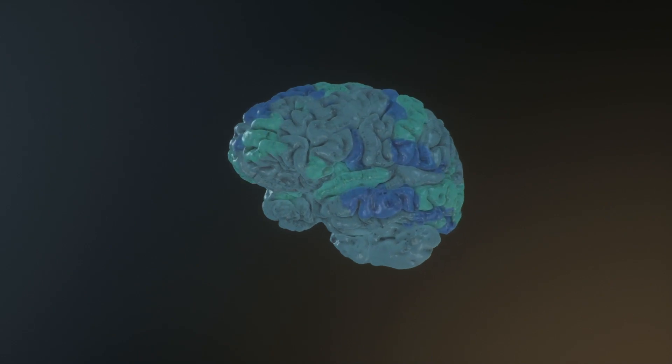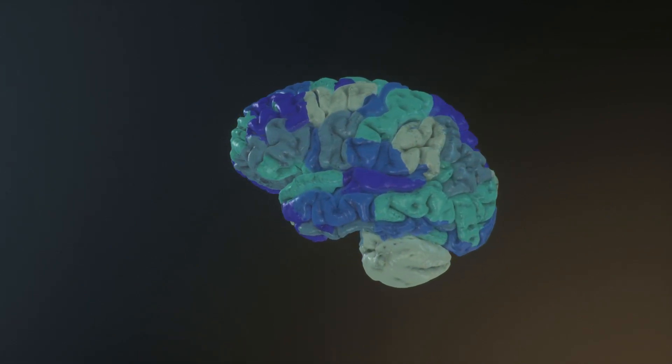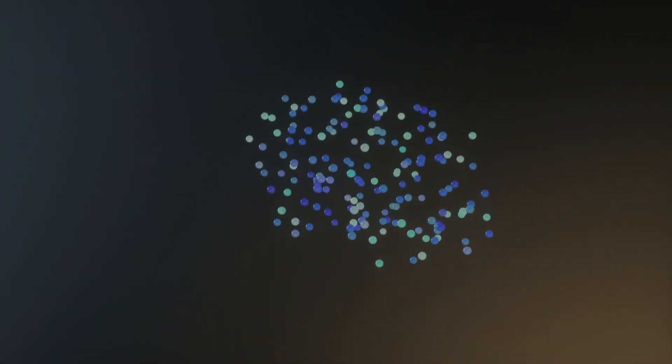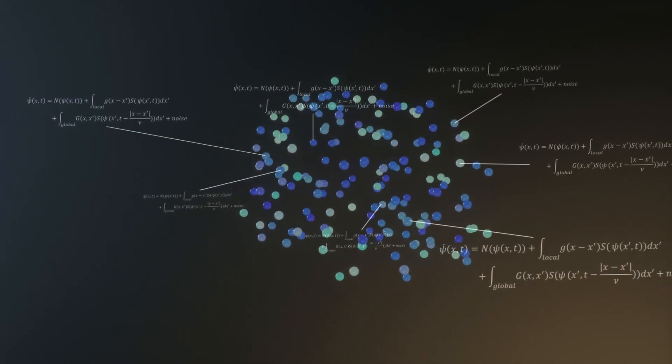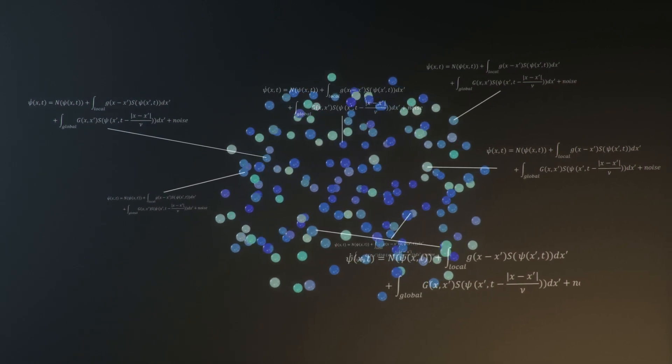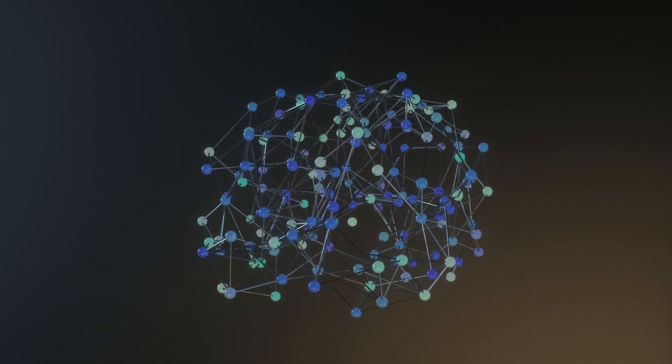The current state-of-the-art model is the virtual brain. It's a personalized computational model where brain regions are reduced to point-like nodes in a network, discarding their orientations. A mathematical model is attached to each node. Additionally, the brain's complex connectivity is derived from the patient's MR images.